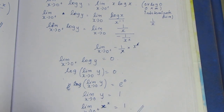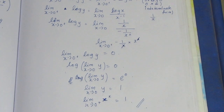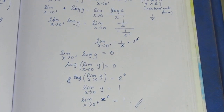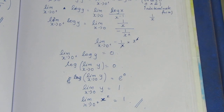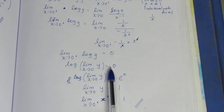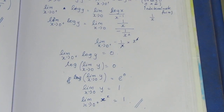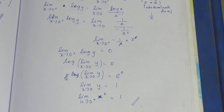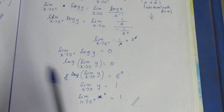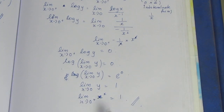So 1 is the answer to this sum. This is a different procedure — you can use it for similar problems in the 7th sum category. If we have an x to the x form, we add log and convert it. So this is the final answer. Thank you.